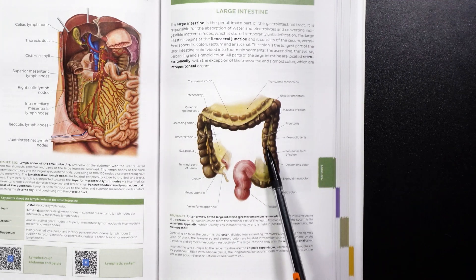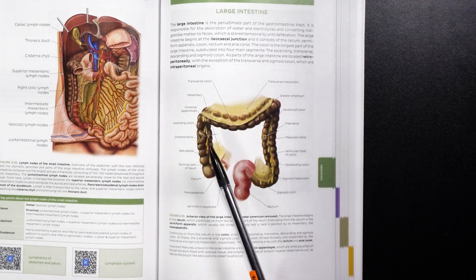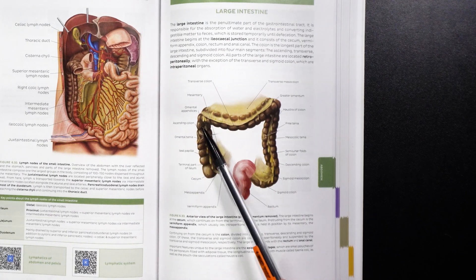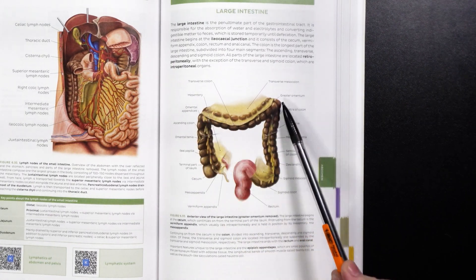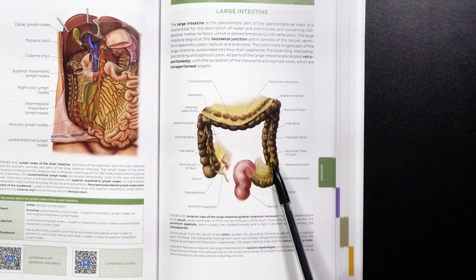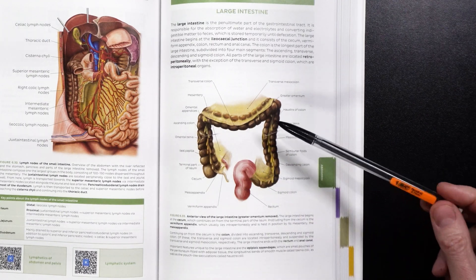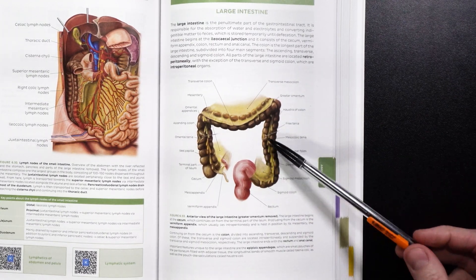The reason why we call this the descending colon and the other the ascending colon is because the feces are going in this direction — it's going up, it's ascending, it's going transversely, and then it's descending. So that probably makes intuitive sense.